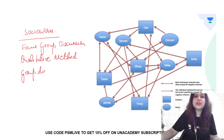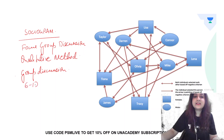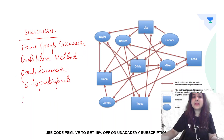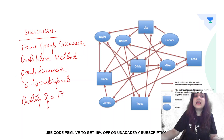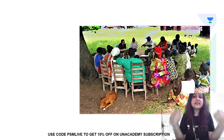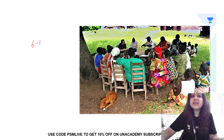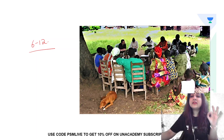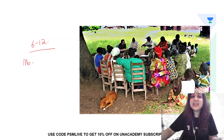How many participants can take part in a focus group discussion? 6 to 12 participants. And the most important thing — what is the sociogram depicting? This depicts the quality of an FGD. In a sociogram, basically in an FGD, if you look at this image, these 6 to 12 participants sit in a circle. There is a moderator who is going to lead the FGD.